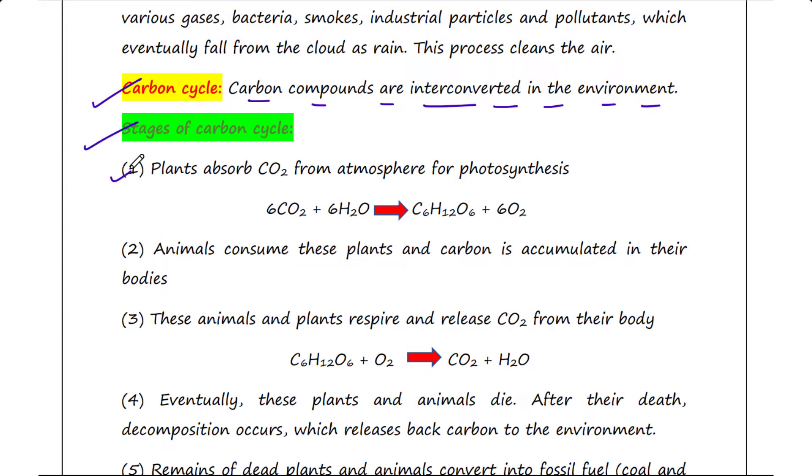Let's see the stages of the carbon cycle. The first stage is that plants absorb CO2 or carbon dioxide from the atmosphere for photosynthesis. This is the reaction of photosynthesis where CO2 is absorbed by plants and glucose is produced.